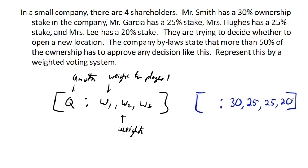Since the bylaws state that more than 50% of the ownership has to approve a decision like this, our quota will be 51 votes. It's one more than half because we need more than 50%.